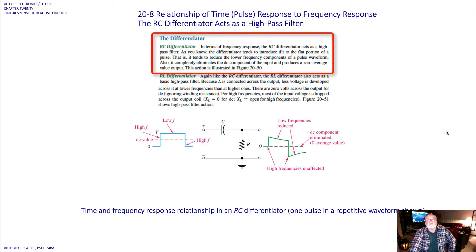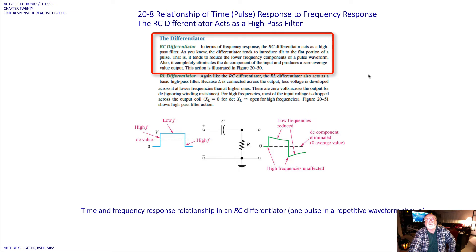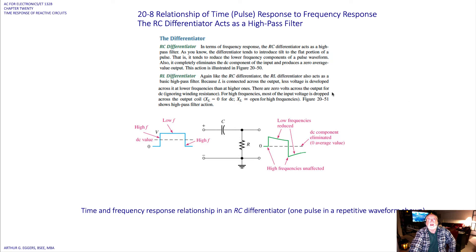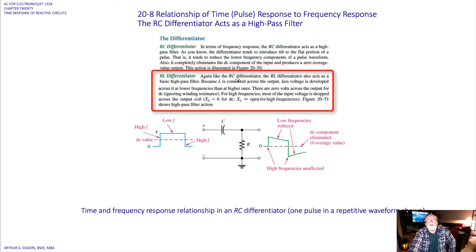For the RC differentiator in terms of frequency response, it acts as a high pass filter. The differentiator tends to introduce tilt to the flat portion of the pulse — you get an exponential curve on the top. It tends to reduce the lower frequency components of a pulsed waveform, and it completely eliminates the DC component of the input, producing a zero average value.